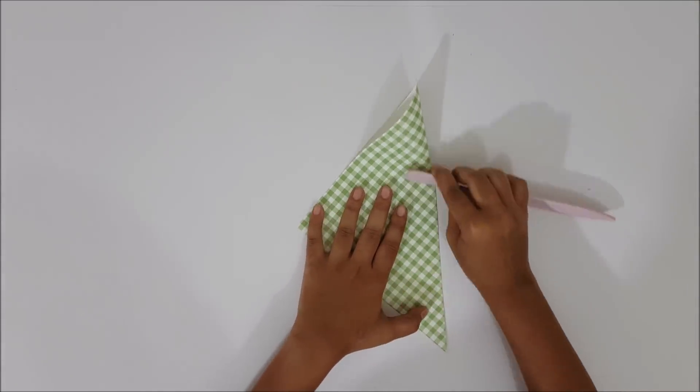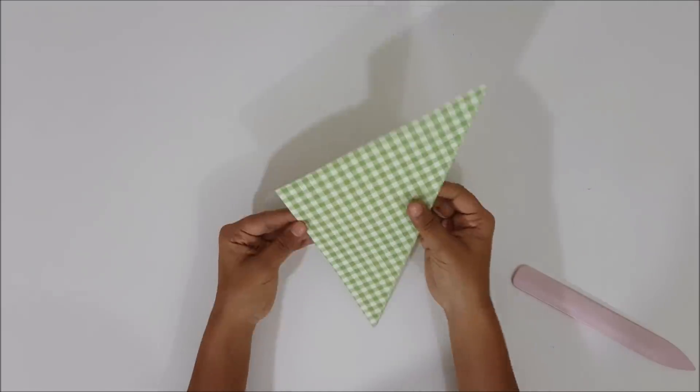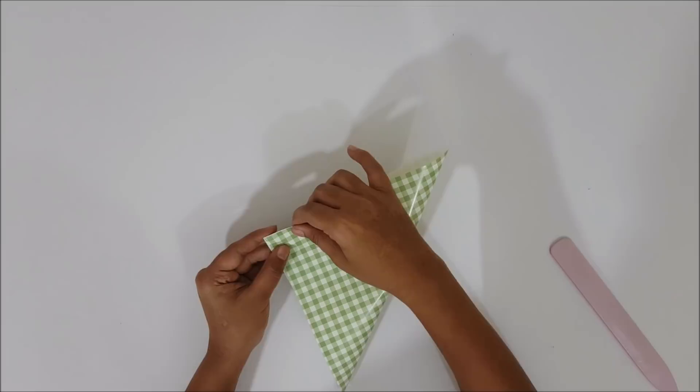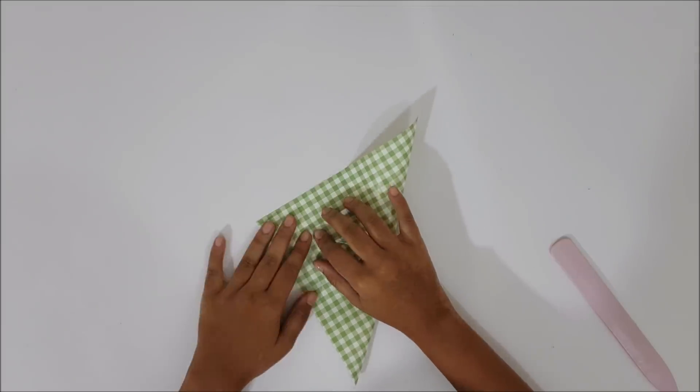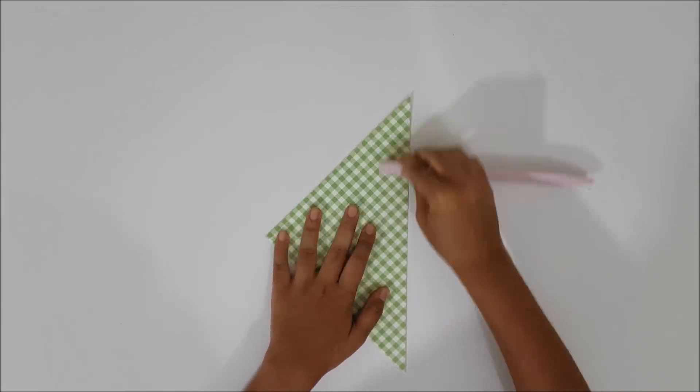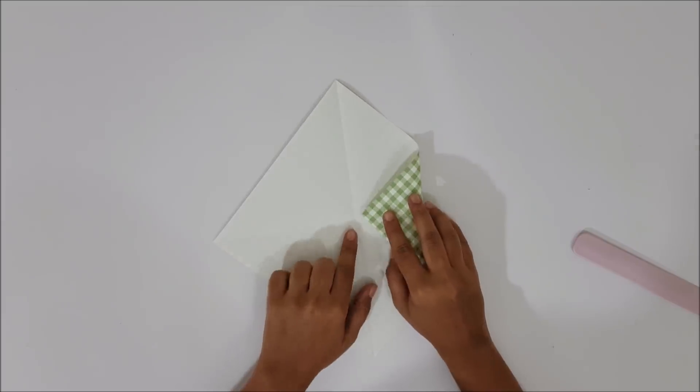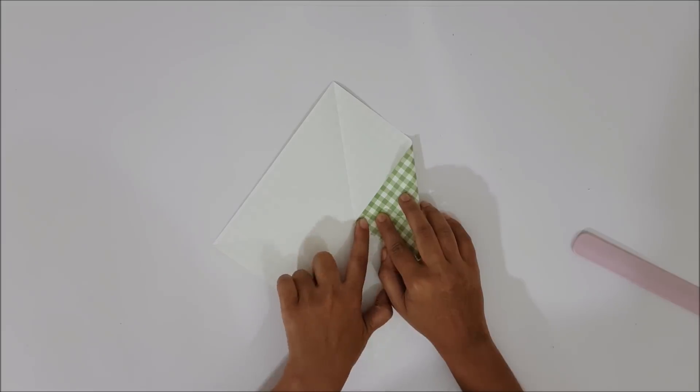Open the folds and again fold it in half diagonally, but this time using the other two corners. Again open it. Now bring one corner of the paper to the center as shown.